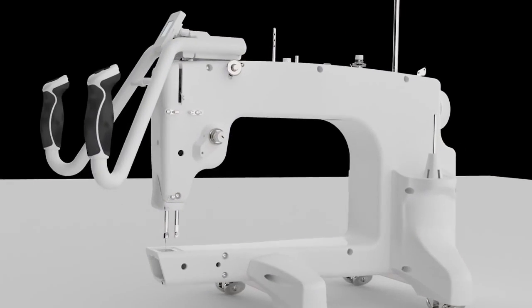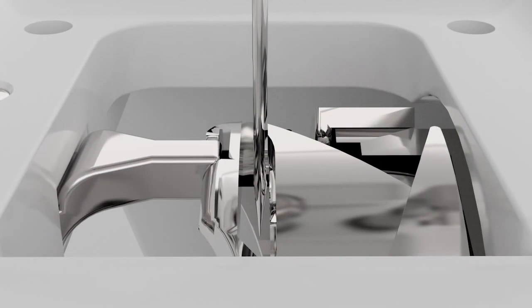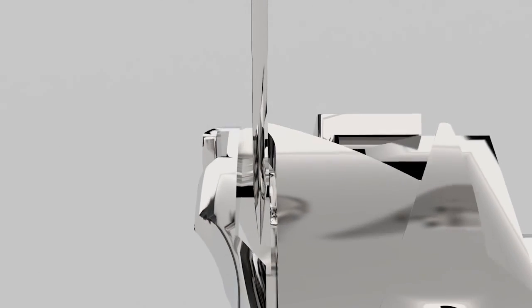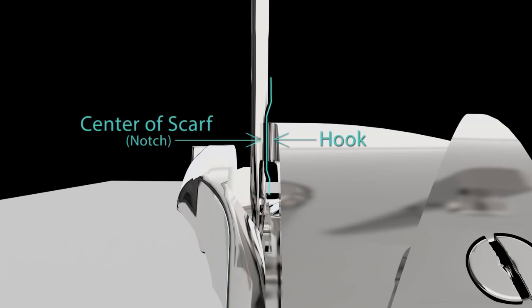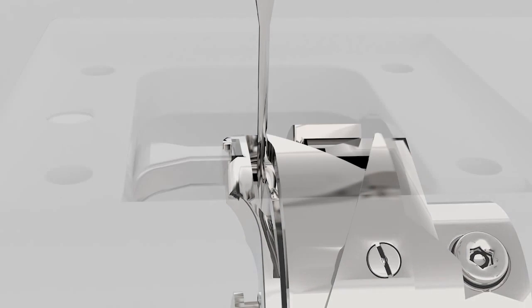The goal of the timing process is to center the hook with the needle scarf and have the hook as close as possible to the needle without touching it at any point in the up and down cycle. It is also important that this position is achieved at the right time in the up and down cycle of the needle.